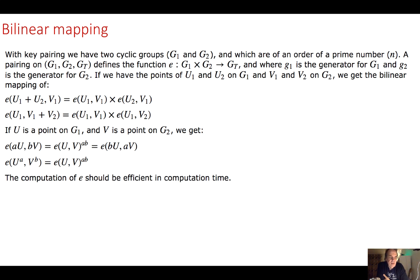In this presentation we'll look at what's called a pairing or a bilinear mapping. With this we have two cyclic groups — two elliptic curves that both share a prime number n — and then we have a pairing. If we take the two and multiply them we end up with some function that gives us gt, another elliptic curve mapping. If we get the mapping correct we have the bilinear mapping, where e of two points u1, u2 and v1 is equal to e(u1, v1) times e(u2, v2).